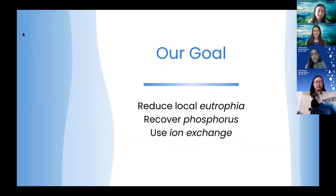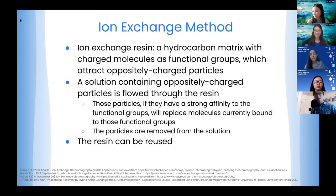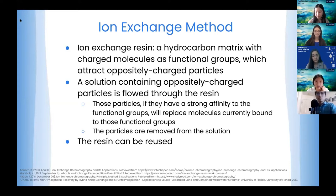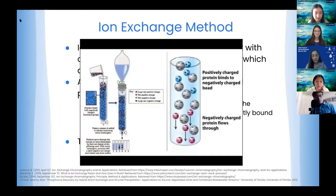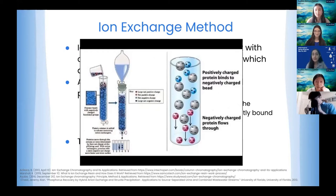Our goal is to reduce local eutrophication in the San Diego area by recovering phosphorus specifically from wastewater using ion exchange columns. A resin is a hydrocarbon matrix housing molecules that attract ions such as phosphate groups. The benefits of ion exchange resins are that they can be regenerated — the phosphate groups can be taken out again, so resins can be reused. When wastewater flows through the resins, positive ions attach to the negative beads through electrostatic reaction. The resin we're using is called weak base anion resin, which has a high affinity for phosphate groups.